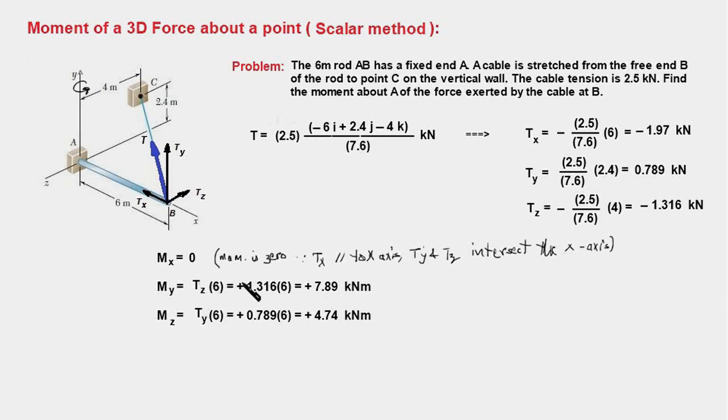Tz will cause rotation in this direction; therefore it will be positive. The moment arm for Tz would be this distance, which is 6 meters. So My is going to be Tz times 6, and Tz is 1.316 kilonewtons. Therefore My would work out to 7.89 kilonewton meters. Note that when I plug in the value of Tz, I ignore the minus sign. I have already taken care of by showing its right direction in the diagram, and I am visually finding out direction of the moment. Therefore I need not consider the negative sign of Tz.